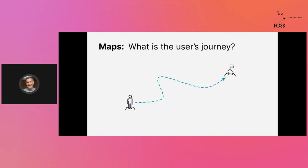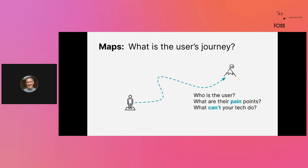Moving from Caves — exploring the unknowns — is Maps. What is the user's journey? How do they get from where they are to success? This involves asking a lot of questions: who is the user, what are their pain points, and what can't your tech do for them? It's really important to know what you're good at and what you're bad at. There's a whole range of things you can do to articulate what it looks like to be a user so that you can talk about and appreciate what their journey is.